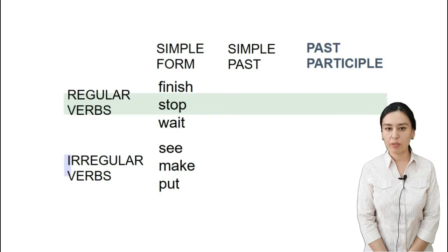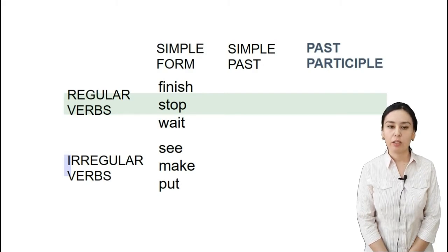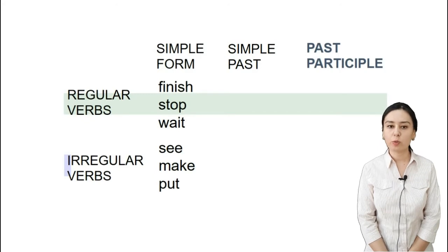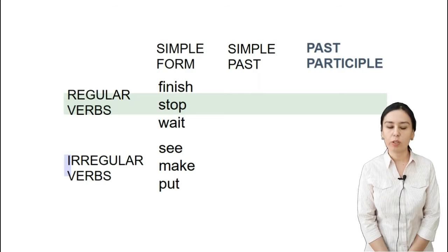Let's have more information about past participle. We selected two kinds of verbs: regular and irregular. The past participle and simple past forms of regular verbs are simple, because we add '-ed' after the stem of the verb. We selected three verbs: finish, stop, and wait. Let's see how they change their form in past simple.